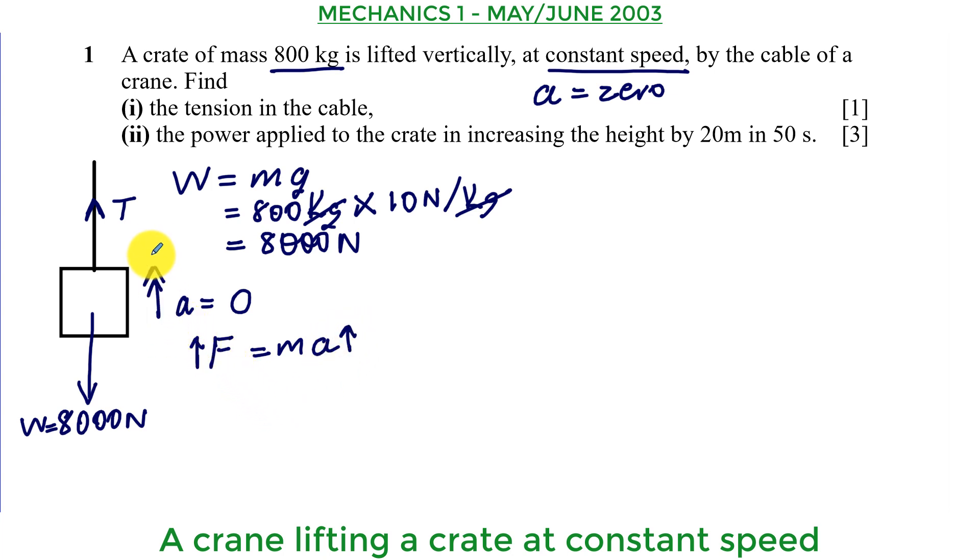Because we are resolving upwards, we take the force which is pointing upwards to be greater than the force which is opposing it. So in order to get the resultant force upwards, we do T minus the force which is opposing. It's equal to the mass which is 800 times the acceleration which is zero.